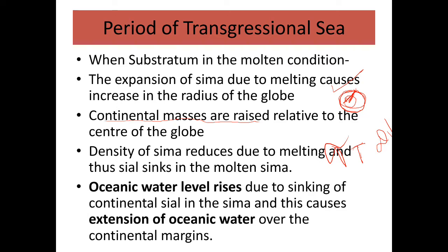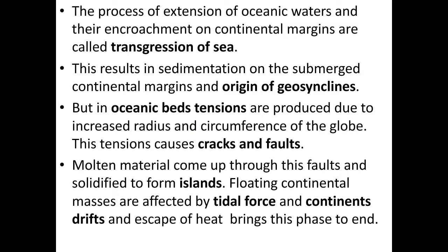As temperature rises, expansion occurs and the density of rocks falls. Sial sinks in the molten sima. Because sial is sinking, oceanic water levels rise due to the sinking of continental sial into the sima. This causes extension of oceanic water over the continental margins. The process of extension of oceanic waters and their encroachment on continental margins is called transgression of sea.